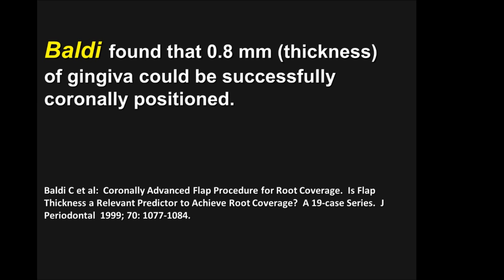But how thick should it be? Until Baldy published his article in 1999 it was just clinical opinion. Baldy took 19 cases and coronally positioned existing keratinized tissue, measuring thickness with a caliper, and found successful cases needed a minimum of 0.8 millimeters thickness. From a practical standpoint, we say it needs to be one millimeter thick. So the criteria: three millimeters of vertical keratinized tissue, one millimeter thick, to successfully coronally position it.